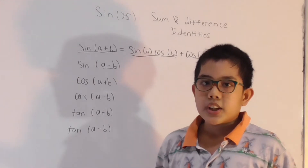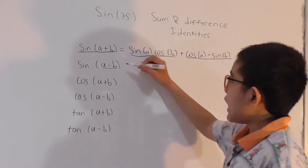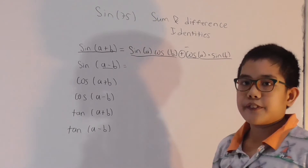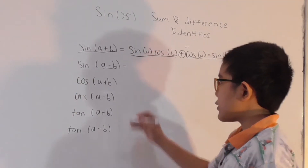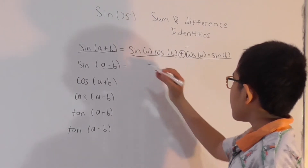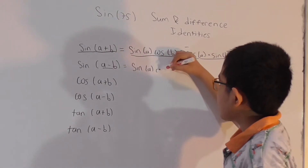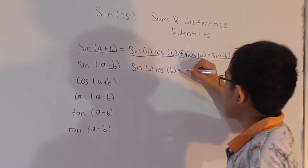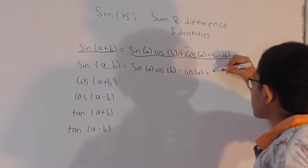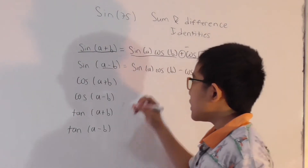For sine of (A-B), it is the exact same equation as sine of (A+B), but the positive sign is changed to a negative. So it becomes: sine A times cosine B, minus cosine A times sine B.